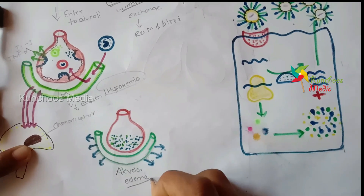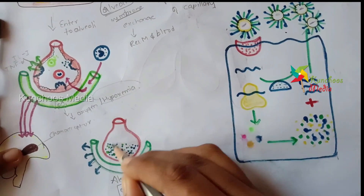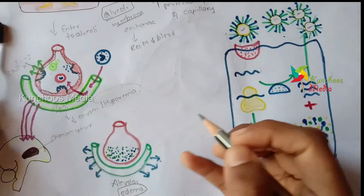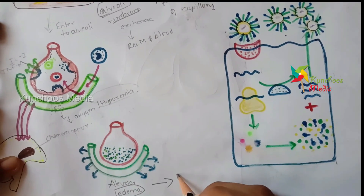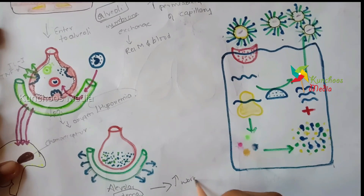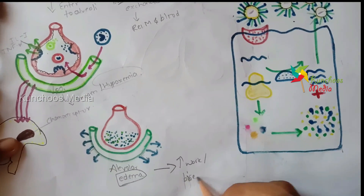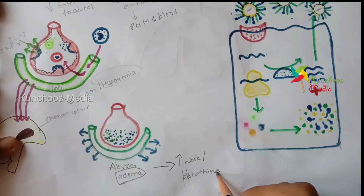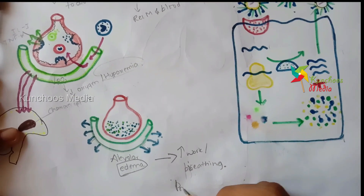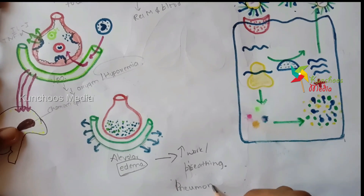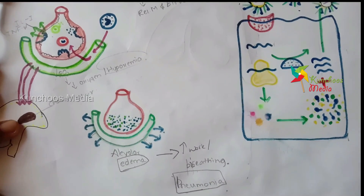This leads to a condition called alveolar edema. As the word edema suggests, it's swelling — and this swelling occurs due to the accumulation of fluid like mucus. This condition leads to increased work for breathing, or difficulty in breathing. This difficulty in breathing is what we call pneumonia, and this is how coronavirus affects our respiratory tract.